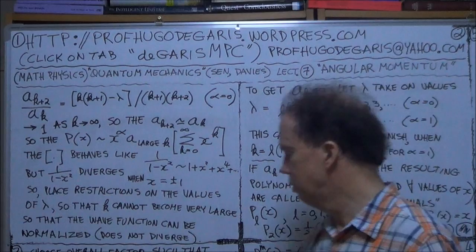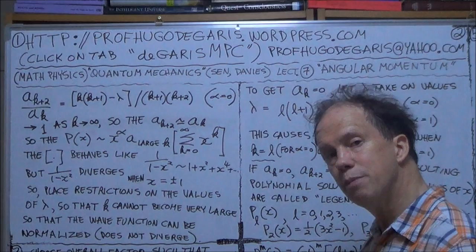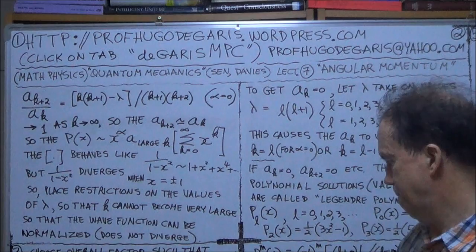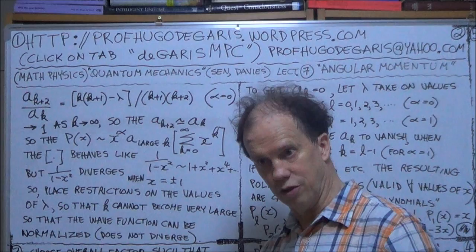Next session, I'll talk a bit about a generator. There's a way to generate these polynomials, these P L's. And then we start talking about the associated Legendre polynomials, and the associated Legendre equation.